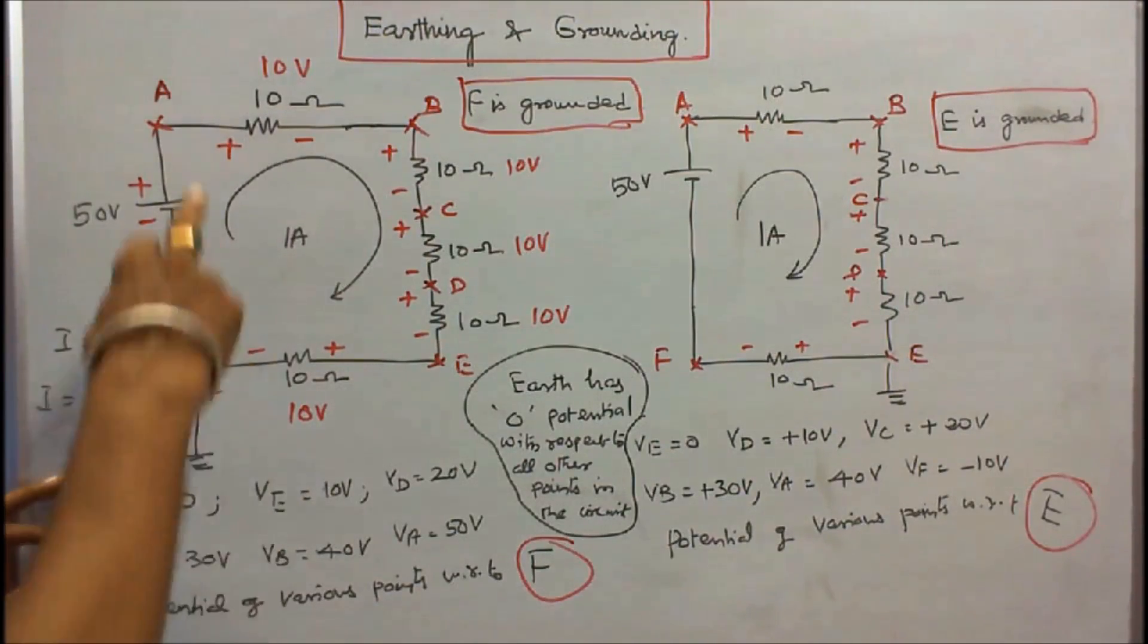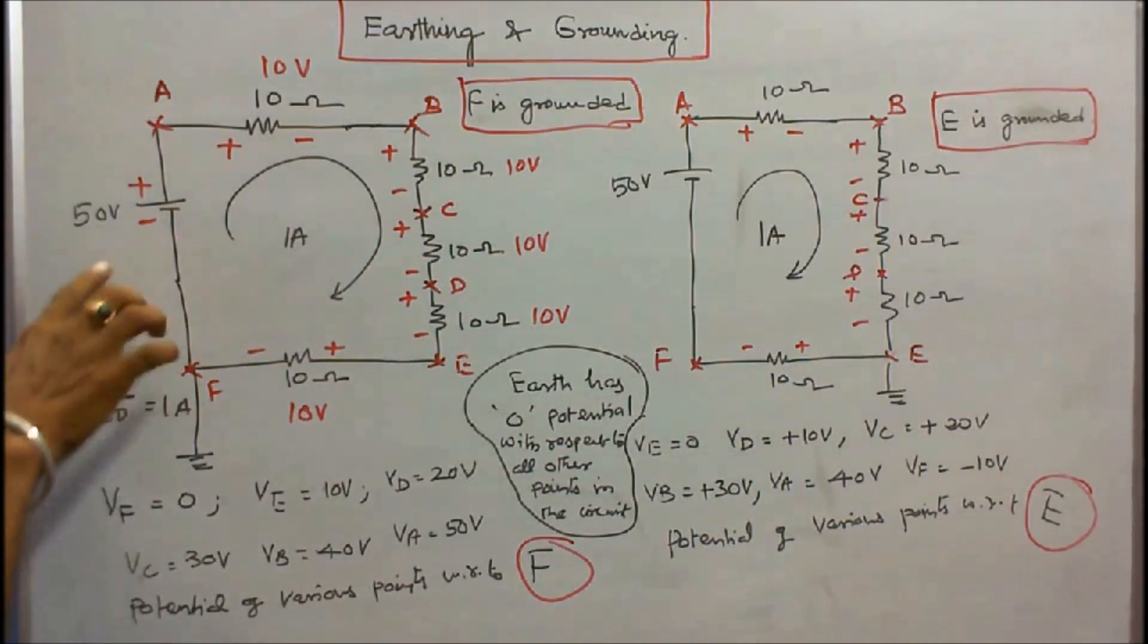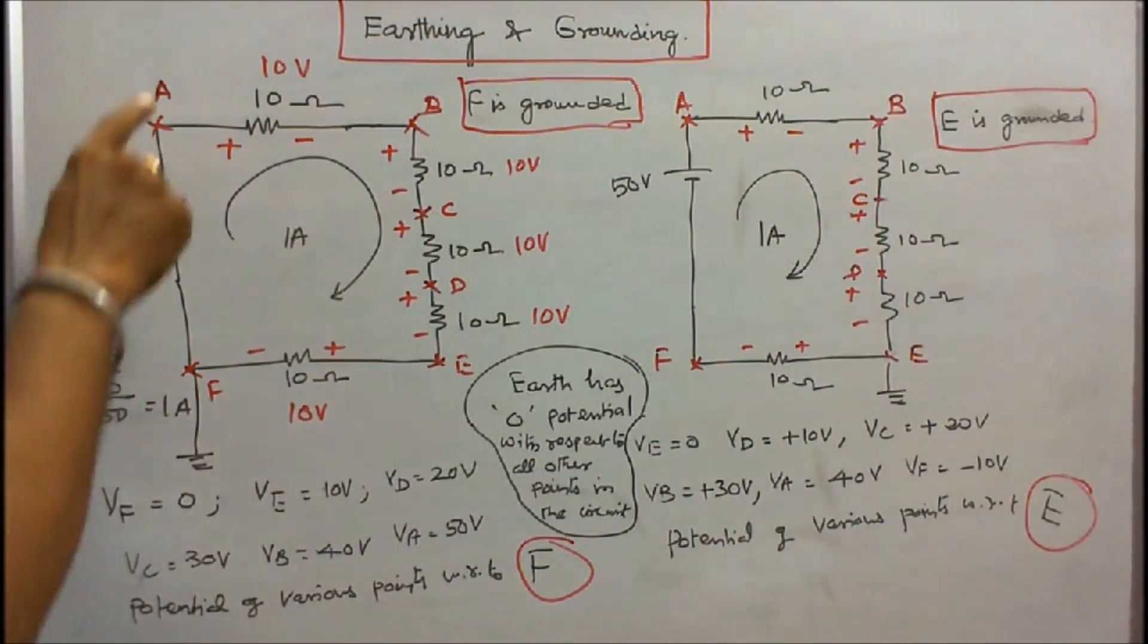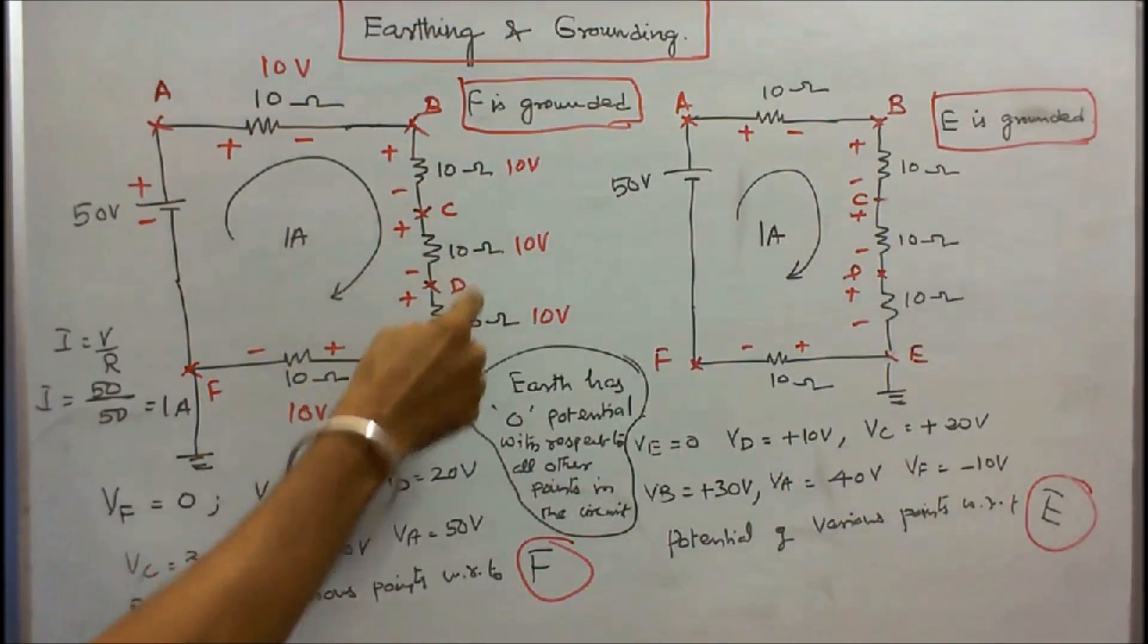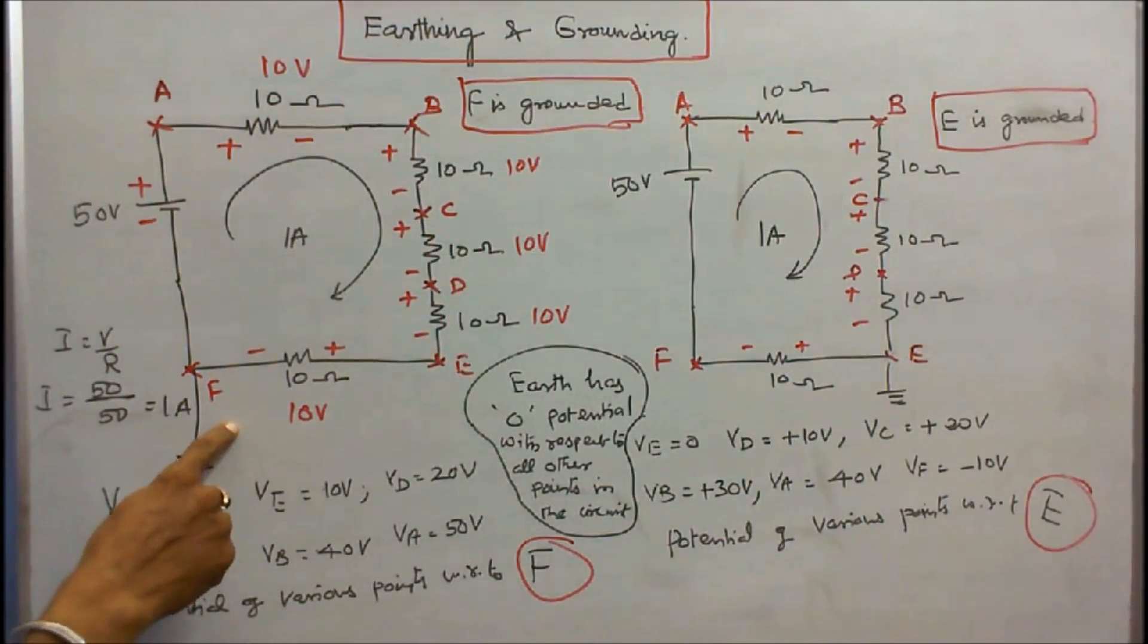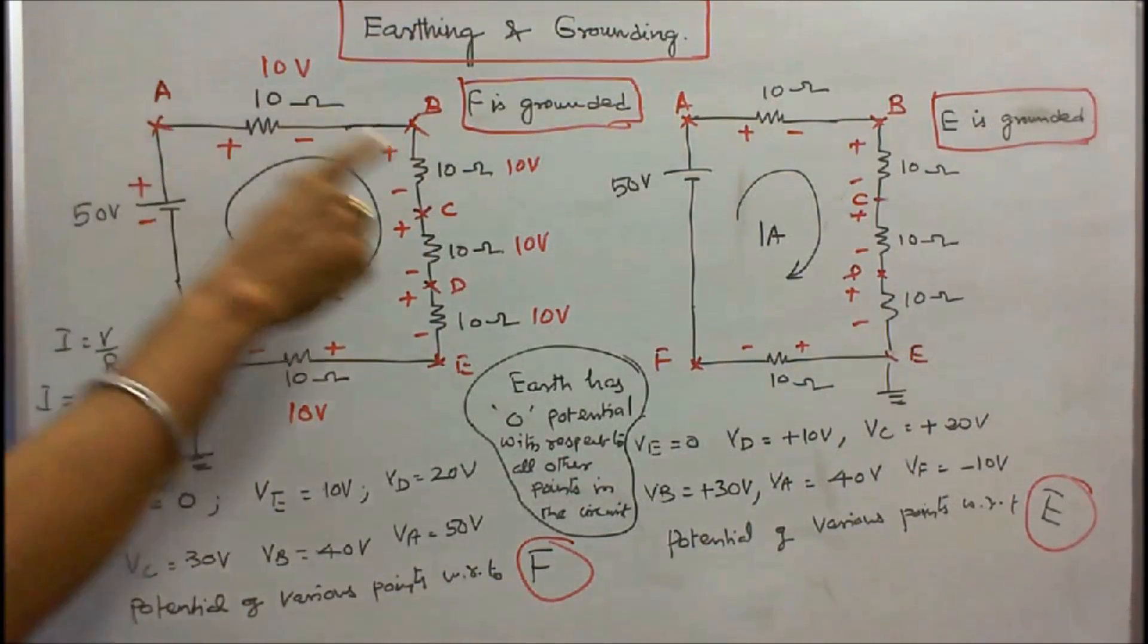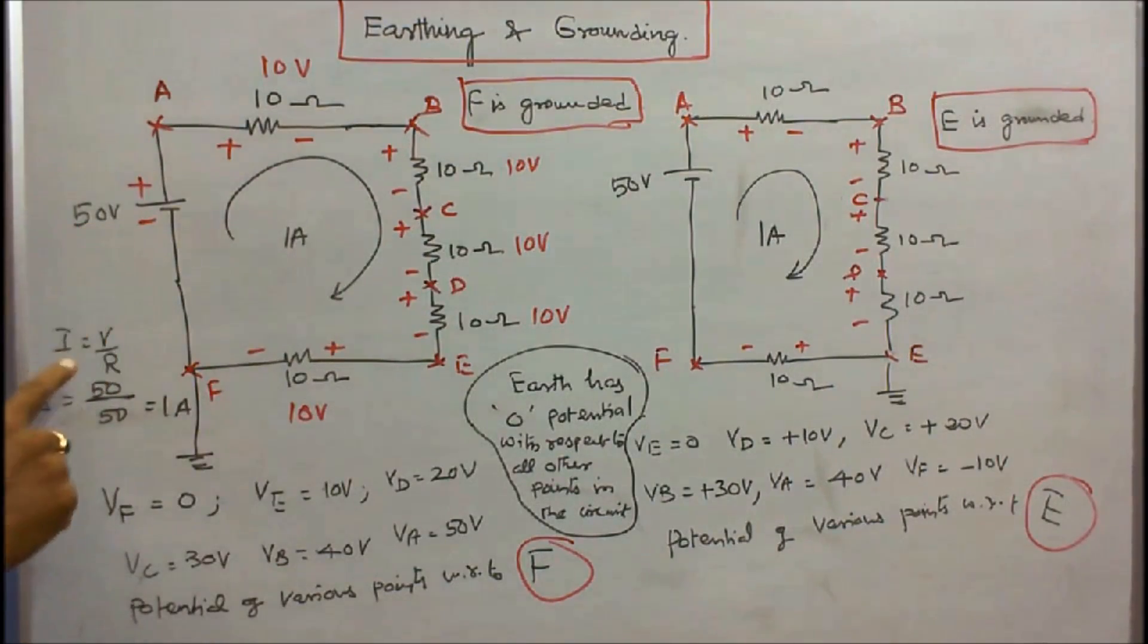Here five 10 ohm resistors and one voltage source 50 volts are connected as shown in figure. This is A, B, C, D, E, F. Point F is grounded. The question is: Find the potential of various points with respect to F. Total resistance is 50. Voltage is 50. Therefore I is equal to 50 by 50 is equal to 1 amps. So voltage across each 10 ohm resistor is 10 volts.